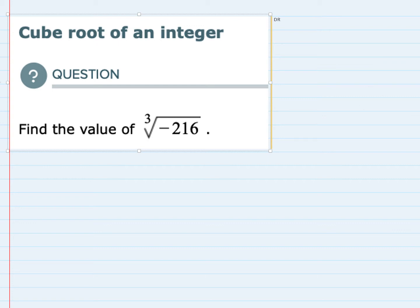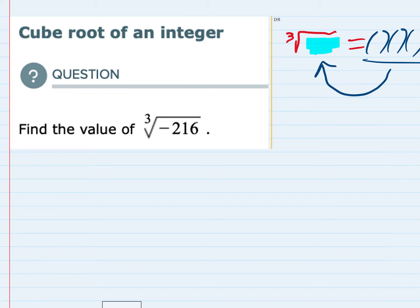To think through what that means, a cube root of a number, whatever that number may be, is really asking what could we multiply by itself three times so that the multiplication gives us the value underneath the cube root.